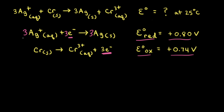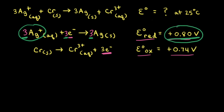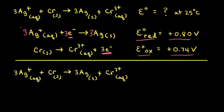Notice that even though we multiplied everything through in our reduction half reaction by a factor of three, we did not multiply the standard reduction potential by three. That's because voltage is an intensive property and doesn't depend on the amount of substance. So it doesn't matter if we're reducing one mole or three moles of silver cations — the standard reduction potential is the same.